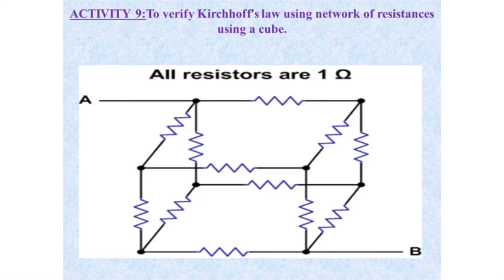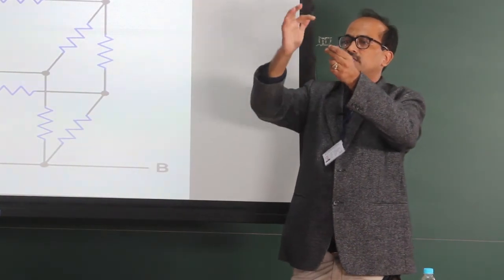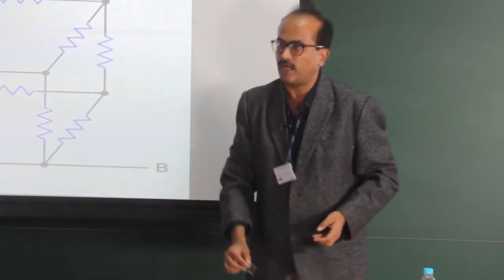This is to verify Kirchhoff's law, this is a 12th class numerical. I made a cube out of 12 wires. I can show that the resistance across the diagonally opposite ends is 5/6R, across the edge is 7/12R.